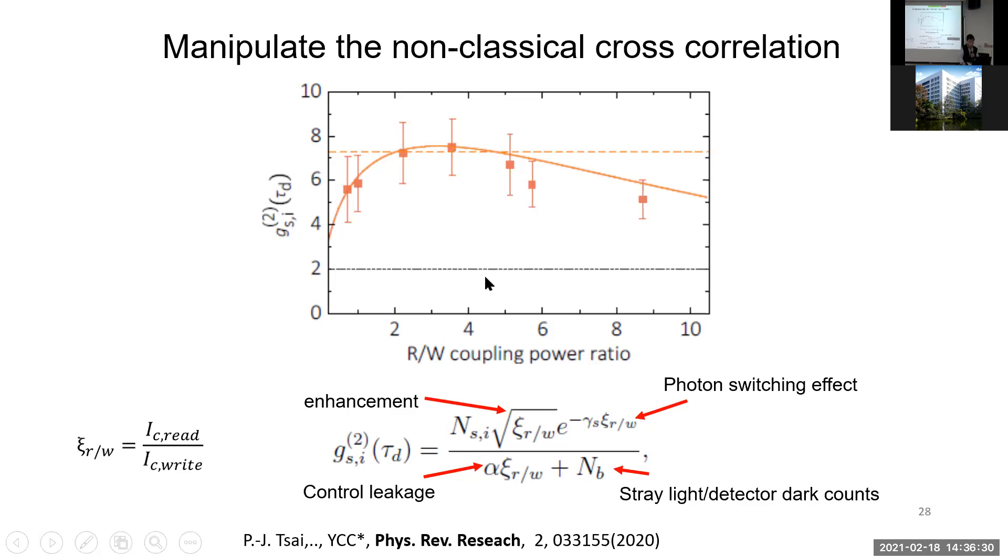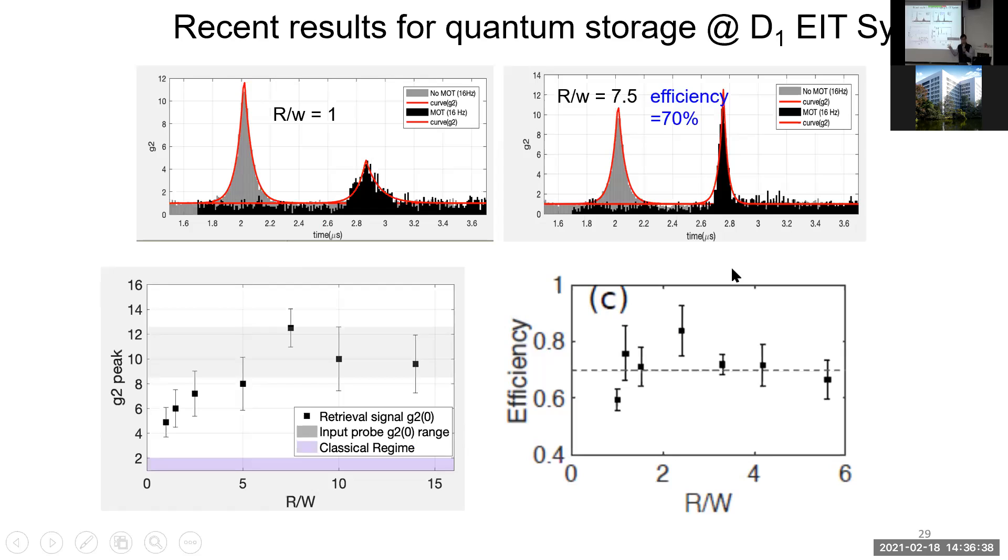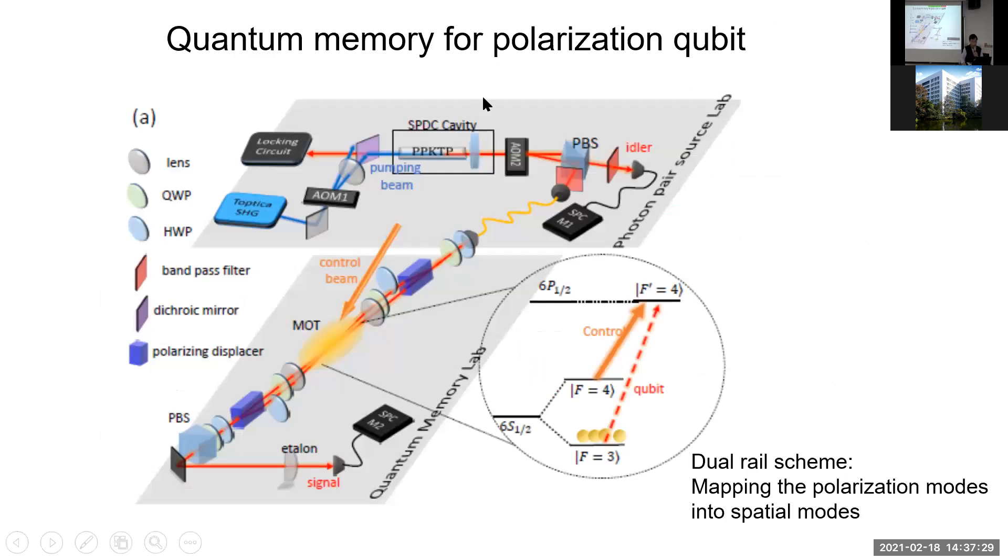However, you actually gain a little bit of non-classical correlation around here. Recently we switched to the cesium D1 line. We can get higher efficiency, about 70%. The G2 cross correlation function versus light ratio also goes up and saturates at some level. Because the control light has a certain leakage into your single photon detector and limits your non-classical correlation function. As you can see, the efficiency is around maybe 70 to 80%. Although this is not the highest efficiency for single photon storage, it's the highest for single photon storage based on SPDC source, light source.